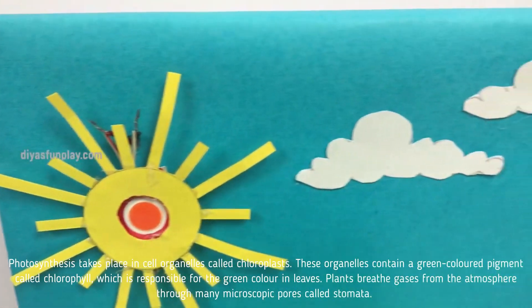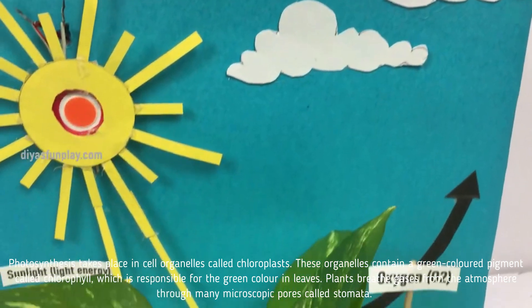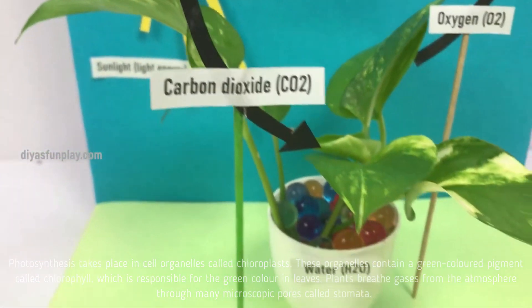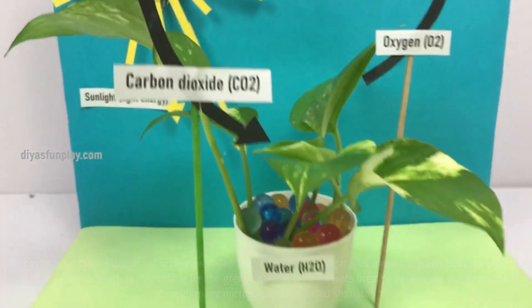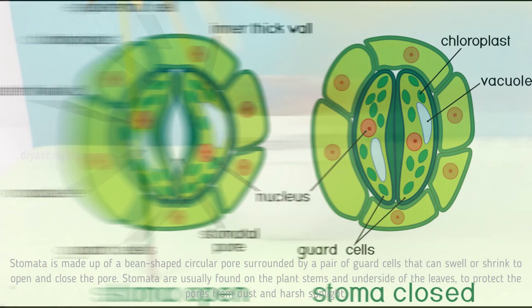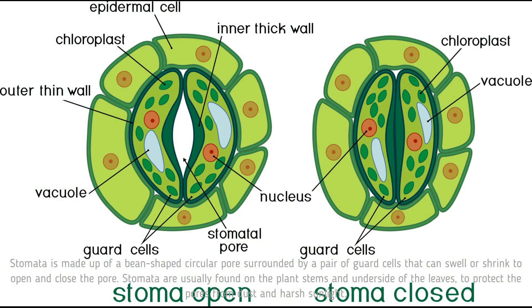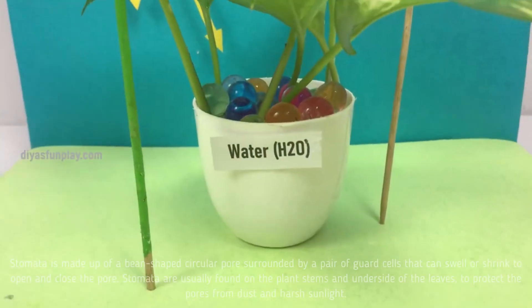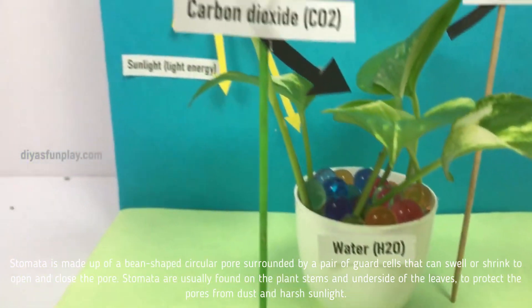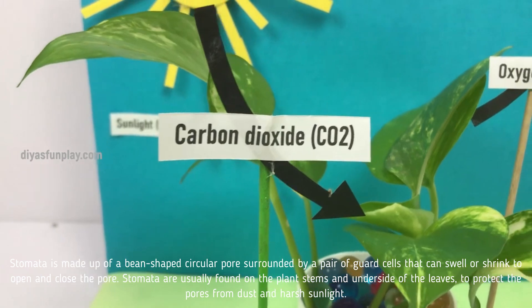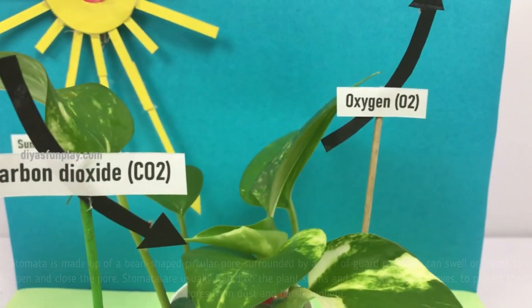Plants breathe gases from the atmosphere through many microscopic pores called stomata. Stomata is made up of a bean-shaped circular pore surrounded by a pair of guard cells that can swell or shrink to open and close the pore. Stomata are usually found on the plant's stems and underside of the leaves to protect the pores from dust and harsh sunlight.